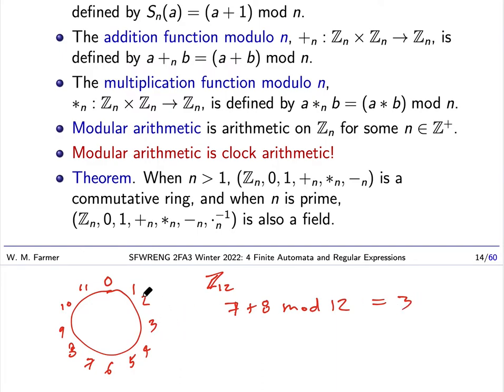I do multiplication the same way. If I was multiplying, let's say, 3 times 4, that's basically adding up 3, four times. I go 0, 1, 2, 3, 4, then 1, 2, 3, 4, then 1, 2, 3, 4. So 3 times 4 mod 12 is 12, so this is 0. That's what I got.